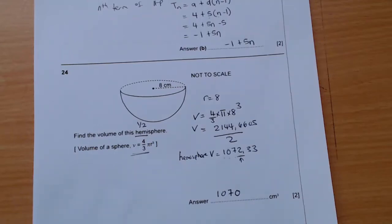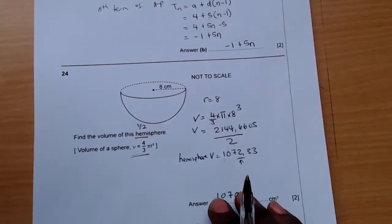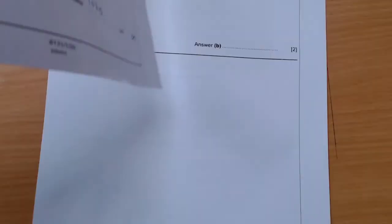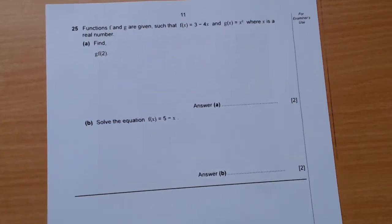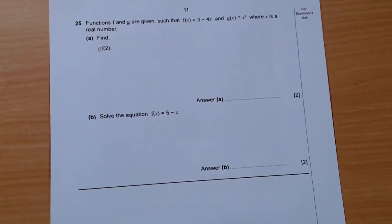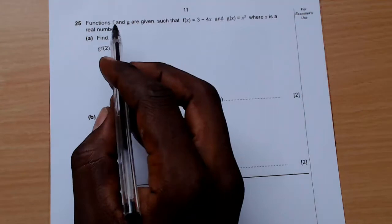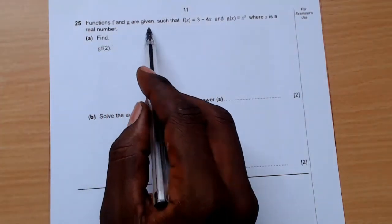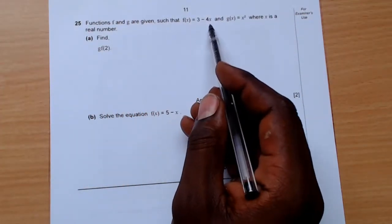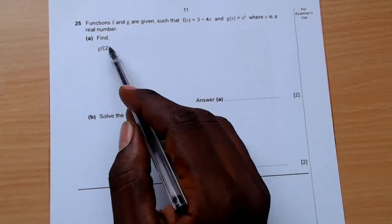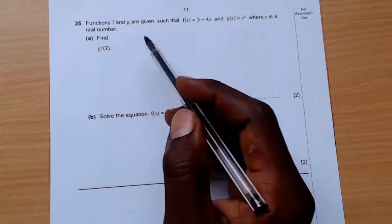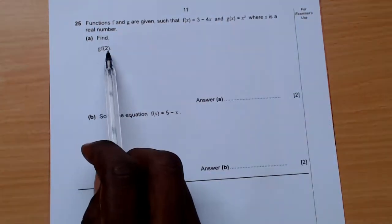Functions f and g are given such that f(x) is 3 minus 4x and g(x) is x squared, where x is a real number. Find g(f(2)). So it's a composite function.